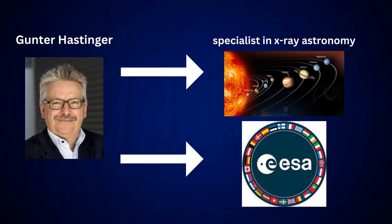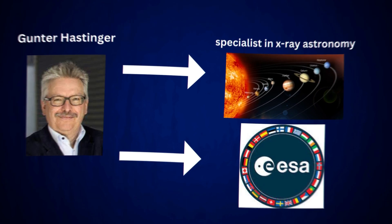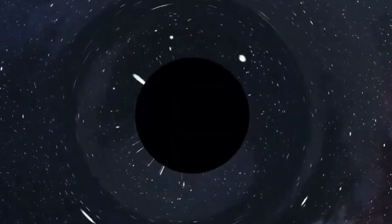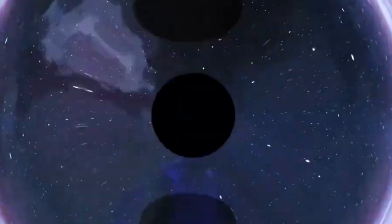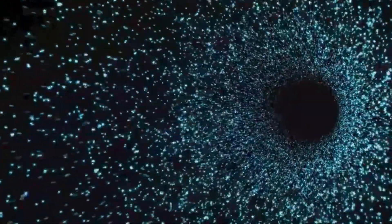Gunter Hastinger, a specialist in X-ray astronomy, director of science at the European Space Agency, and the author of the upcoming astrophysical journal study, emphasizes that the particles were too hot and energetic to condense into black holes until the universe had expanded and cooled sufficiently.